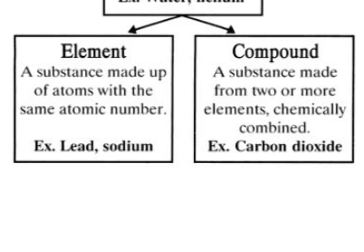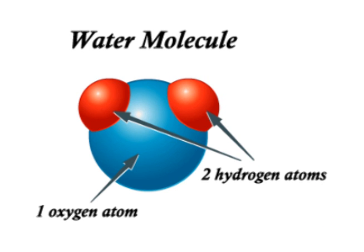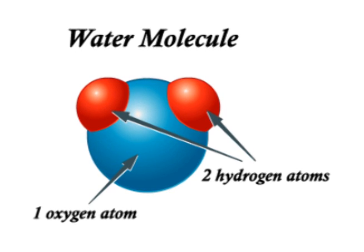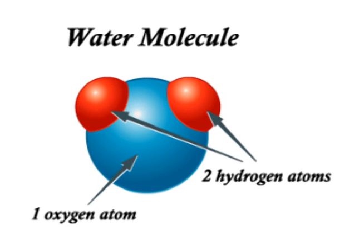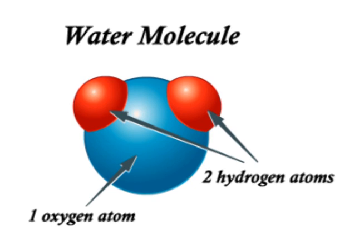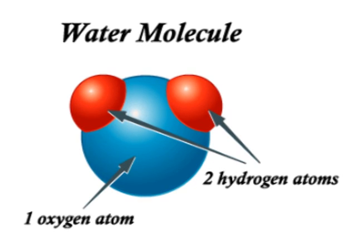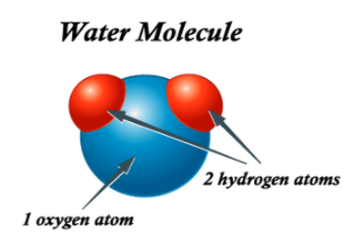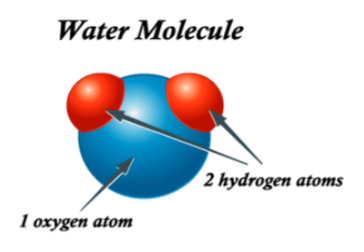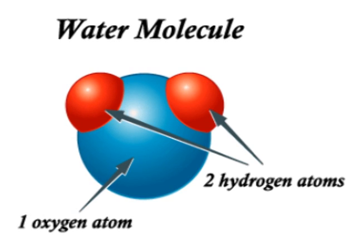A compound is two or more atoms joined together with a chemical bond. For instance, water is two hydrogen atoms and an oxygen atom bonded together. When elements form chemical bonds, it doesn't reduce the quantity of each element in any way. Furthermore, all chemical bonds can be broken back down into the original elements.